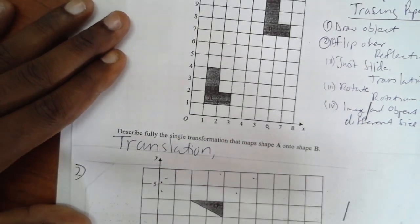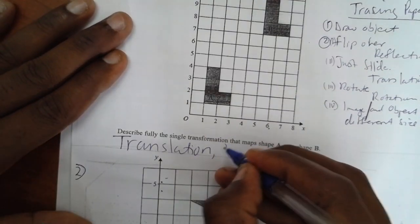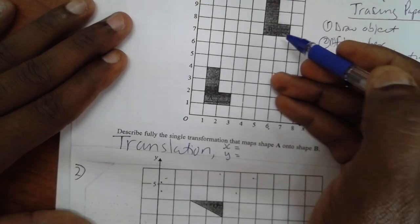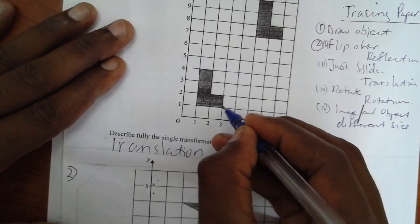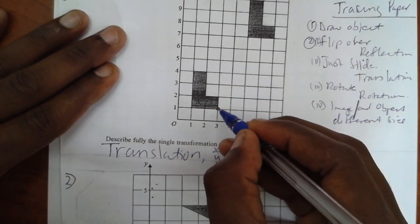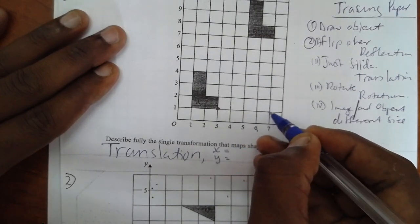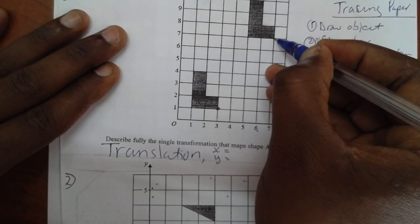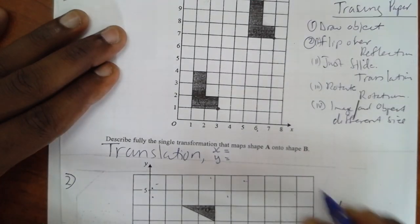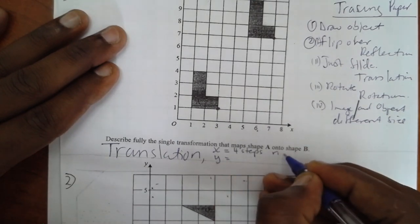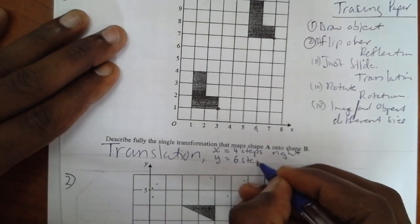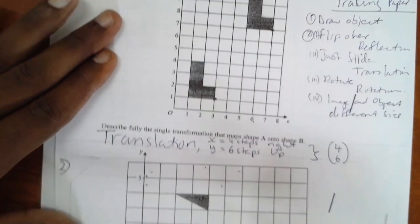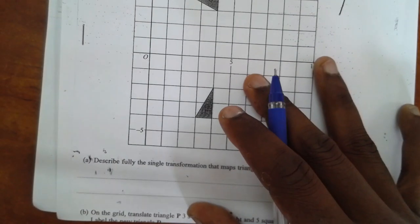So we have concluded using the tracing paper that this is a translation. But we know when describing a translation you have to tell us how many steps you moved on the x and how many steps you moved on the y to move from the object to the image. I choose one corner: I count four steps to the right, then one two three four five six — six steps up. So we have four steps right and six steps up, meaning we write the column vector as (4, 6).